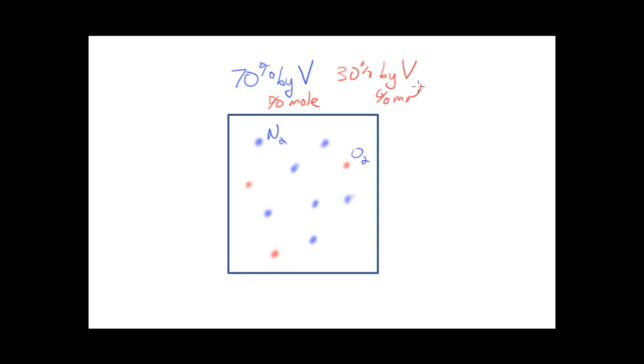What that really says is that if we know the total number of particles and it's 70% by volume nitrogen, that also means that 70% of the total particles are nitrogen particles or nitrogen molecules and 30% oxygen molecules. So the percent by volume can be assumed to also be the percent by mole, that's Avogadro's hypothesis.